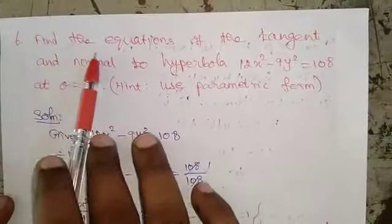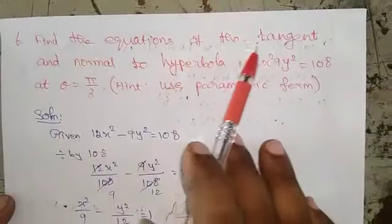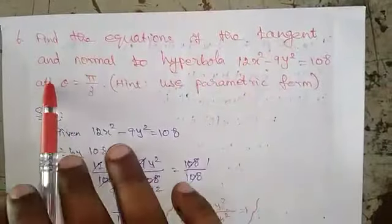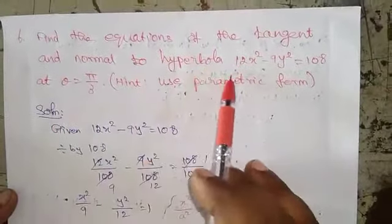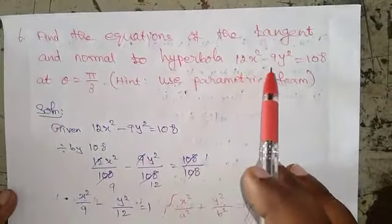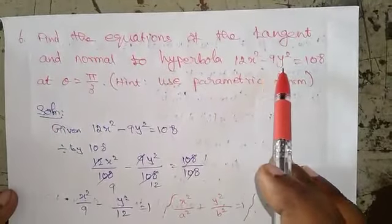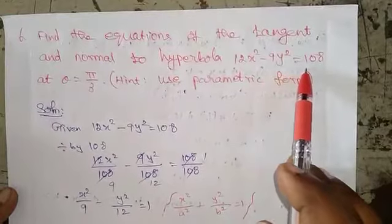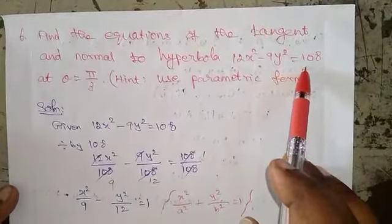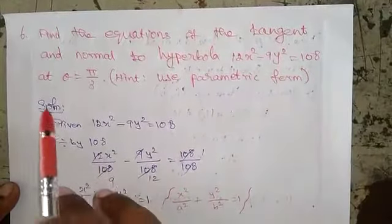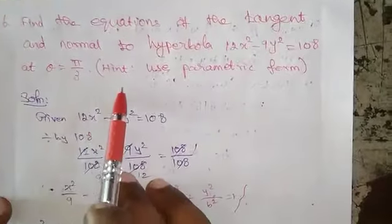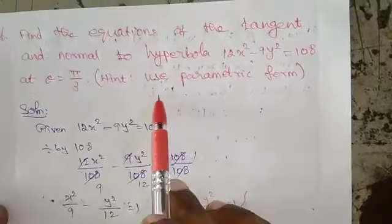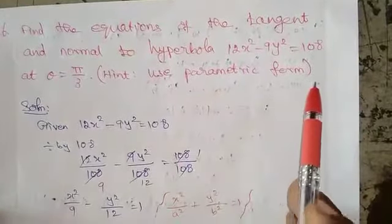Find the equation of the tangent and normal to the hyperbola 12x² minus 9y² equals 108 at theta equals π/3. Hint: use parametric form.